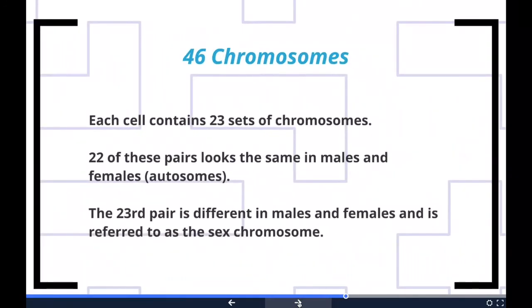Finally, humans have 46 chromosomes. Each cell normally contains 23 pairs of chromosomes — 22 of these pairs, called autosomes, look the same in both males and females. The 23rd pair, the sex chromosomes, differ between males and females.